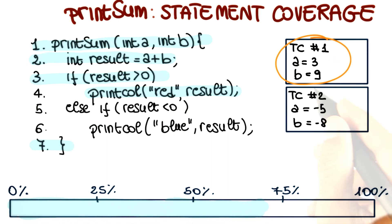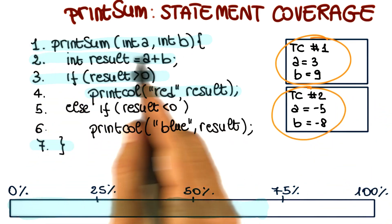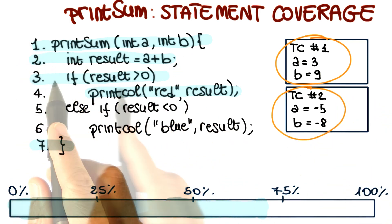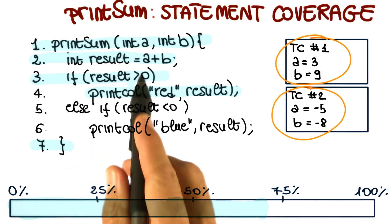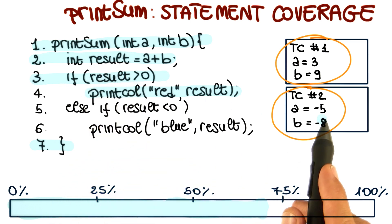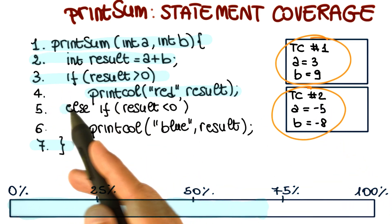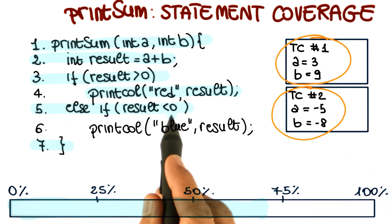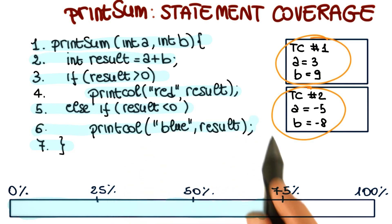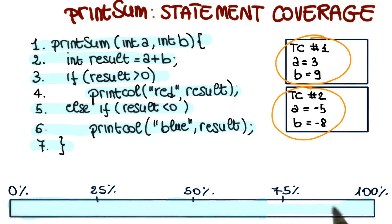Now let's look at what happens when we execute test case 2. Again we execute the first, second, and third statements. This time, the if statement evaluates result as not greater than zero, because our inputs are minus 5 and minus 8. Therefore it executes line 5, and because the result is less than zero, it also executes line 6. At this point, all statements in our code are executed, and we achieve 100% statement coverage.